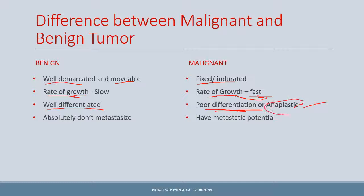A tumor may also be anaplastic, meaning it is highly undifferentiated — there is no differentiation at all in the cells, and we cannot identify whether they are epithelioid or mesenchymal in origin without other laboratory measures such as immunohistochemistry, which we will discuss later in the series.